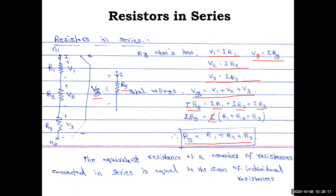The equivalent resistance of a number of resistances connected in series equals the sum of the individual resistances. So if any resistors are connected in series, simply add them together to get a single equivalent resistance.